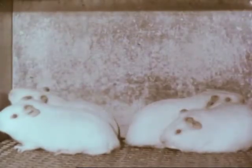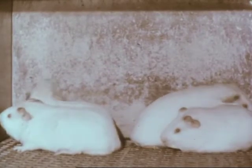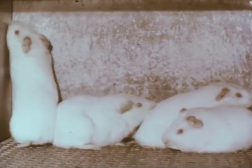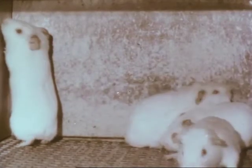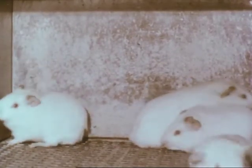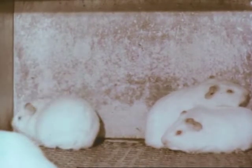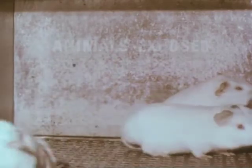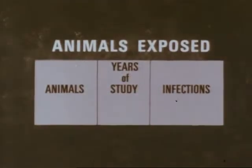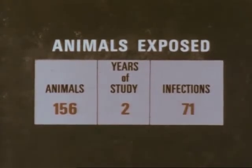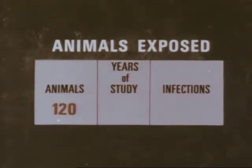The study sought to answer two questions. First, whether animals, if placed at a reasonable distance, can be infected by breathing air contaminated with droplet nuclei produced by patients with open TB. And second, whether such airborne infection can be eliminated by disinfecting the air. When an average of 156 animals were exposed continuously to ward air during the first two years of the study, 71 infections resulted. Out of an average of 120 exposed continuously during the second two years, 63 infections resulted.